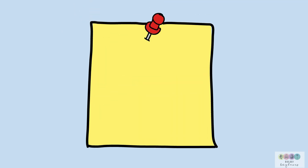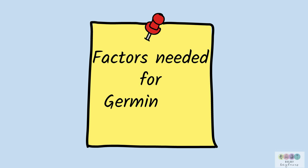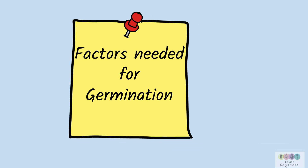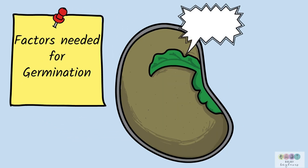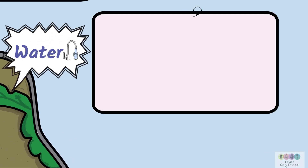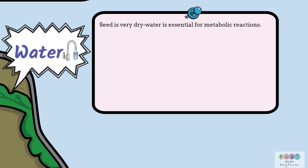Three factors are essential for germination, and if any one of these factors is missing, germination simply will not happen. The first factor is water — it is an essential requirement. The seed is very dry because dormancy commences when the seed loses most of its water content, and water is essential for metabolic reactions that take place in aqueous solution.